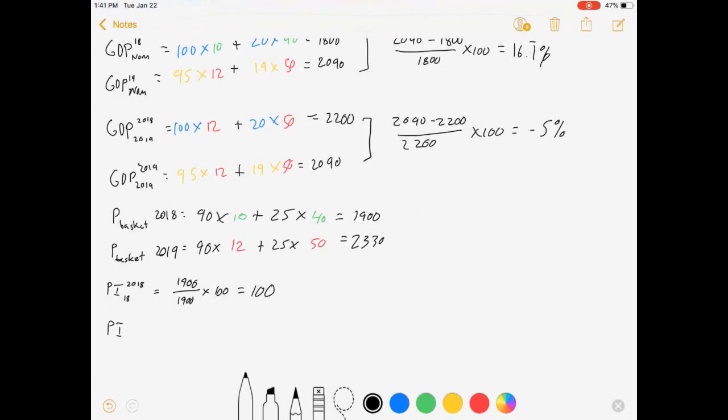Price index in 2019 with an 18 base: 2330 over 1900 times 100. So I took my 2019 market basket price, divided it by the base year times 100, I get approximately 122.63.